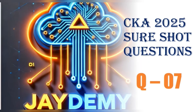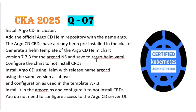Welcome back. We'll discuss one more CKA exam series question. The question is about installing Argo CD in our cluster. We need to add the official Argo CD Helm repository with the name 'argo' to the cluster. In the exam, you don't need to worry about the Helm repository link — it will be provided in the question itself.